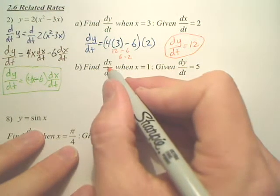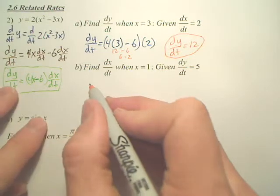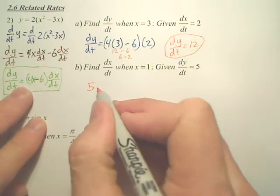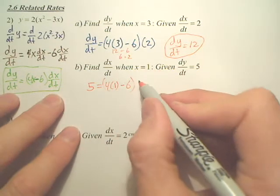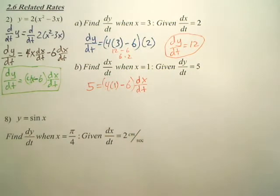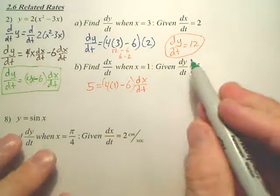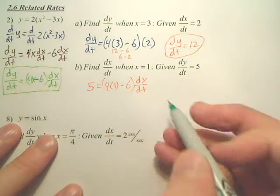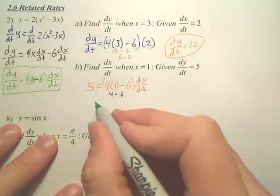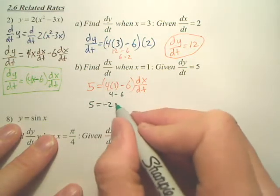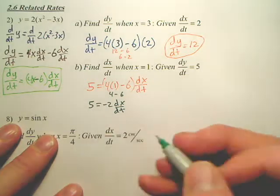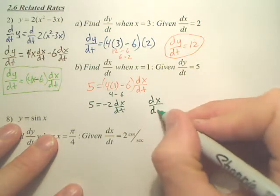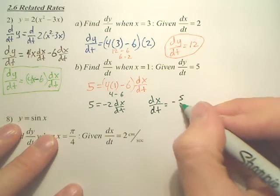Okay, here we want dx/dt. We're given dy/dt, so go to here, dy/dt is 5. We have x is 1, and we want dx/dt. Hopefully you see the difference. We plug in the values that we have, and this is what we want to find out. So that becomes 4, 4 minus 6 is negative 2. So how do you get rid of the negative 2? You divide both sides by negative 2. So it looks like dx/dt is equal to negative 5 over 2.